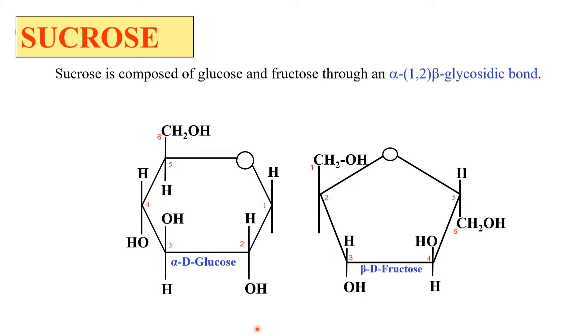You can clearly see now, this is the formation of the glycosidic bond between the hydroxy group of the first carbon atom of the glucose molecule, which is alpha-D-glucose, and the hydroxy group of the second carbon atom of beta-D-fructose.